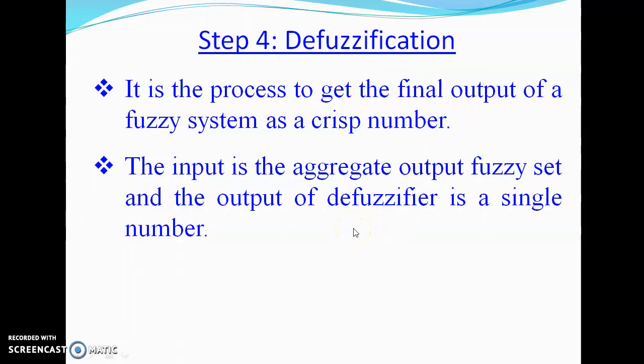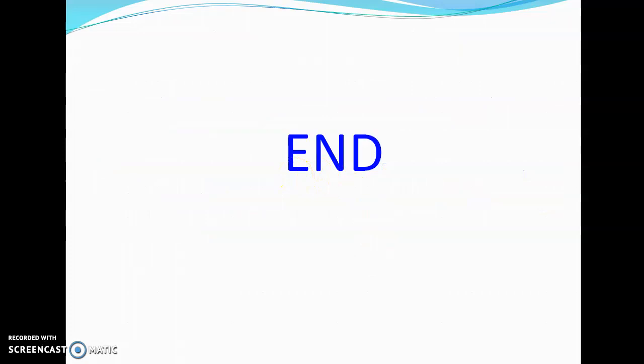Now we move to the last step: defuzzification. As we know from the basic architecture of the fuzzy inference model, defuzzification is the process by which we get the final output of the fuzzy system as a crisp number. We started with crisp inputs and now need to obtain one crisp number again. The input is the aggregate output fuzzy set and the output of the defuzzifier is a single number. This ends the Mamdani fuzzy model coverage across Part 1 and Part 2. In the next class we will discuss different defuzzification techniques to obtain a crisp number from fuzzy sets.